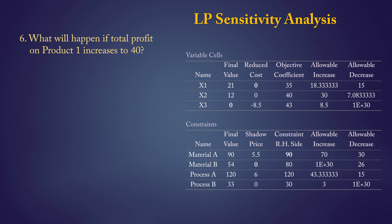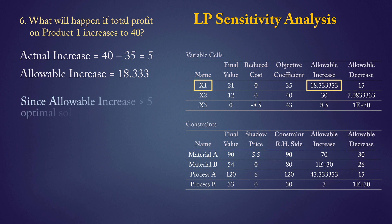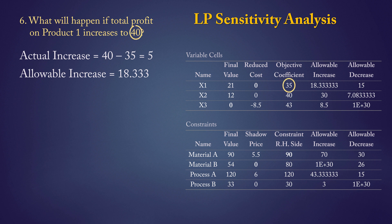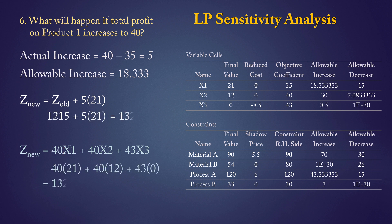Question 6: what will happen if total profit from product 1 increases to 40? Product 1 has a current profit contribution of 35, increasing to 40 — an actual increase of 5. The allowable increase is 18.33, so an increase of 5 is allowed, meaning the optimal solution will not change. However, total profit will change. The new profit can be found by increasing the old optimal profit by 5 times 21, yielding a new total profit of 1320, an increase of 105 from the original optimal profit.